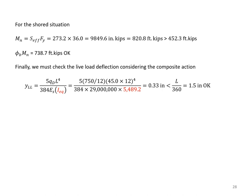For the shored situation, using MN equals SEFF times Fy gives MN equal to 820.8 foot-kips, and the factored capacity phi-B times MN equals 738.7 foot-kips — well above the required 452.3 foot-kips, as expected for the shored system. For live load deflection after composite action, using I-equivalent and the live load gives 0.33 inches, which is less than the span length divided by 360, equal to 1.5 inches. The design is acceptable.